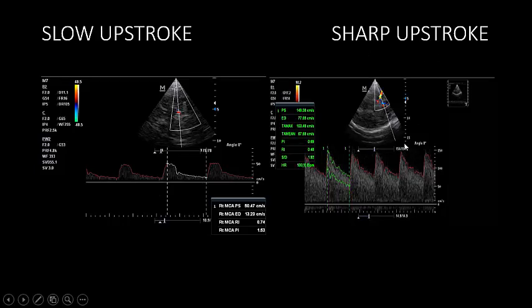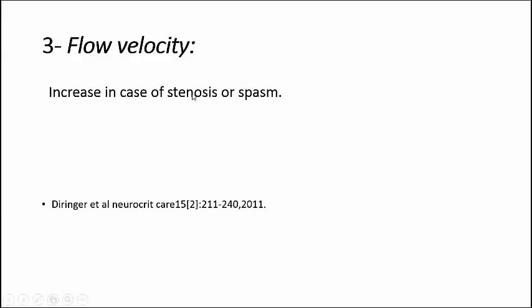The second thing to look for is the systolic upstroke. Normally the upstroke should be sharp — going very quickly to the peak with a steep curve. But if you see the systolic upstroke going slowly to the peak with a dull, slow rise appearance, that means there is proximal obstruction if it happens in one vessel, or systemic hypoperfusion if it happens across all vessels.